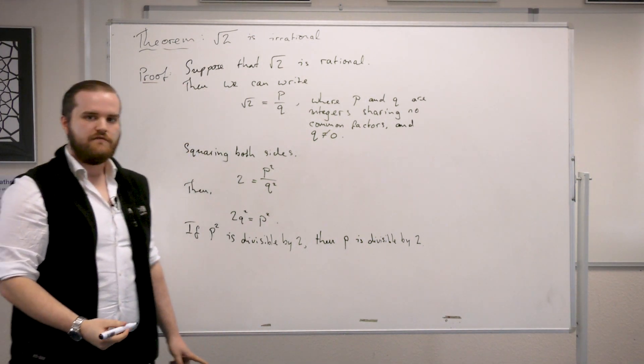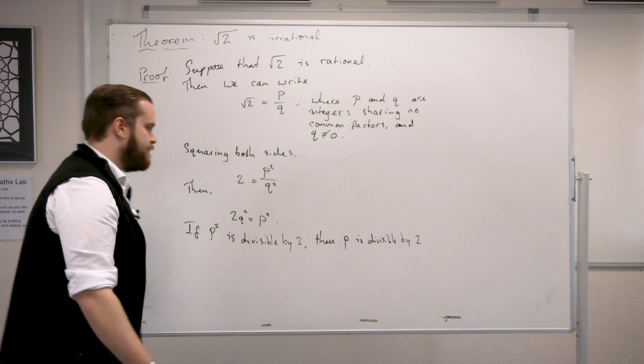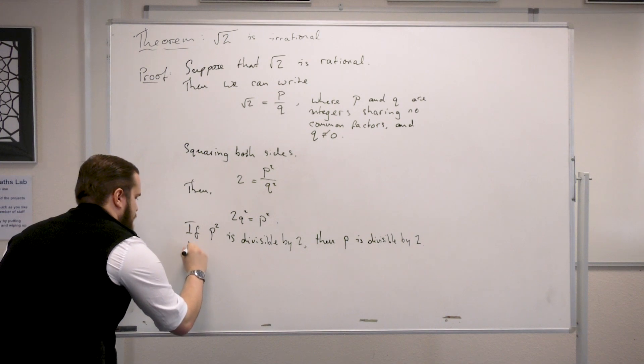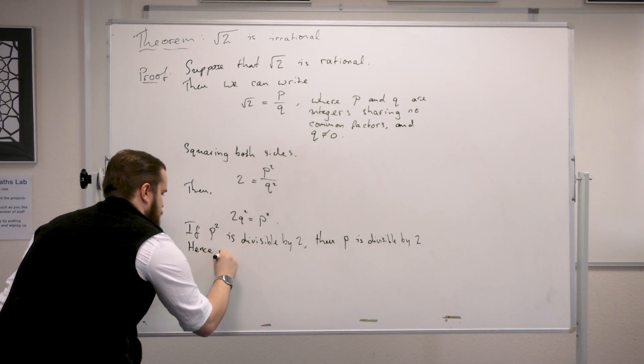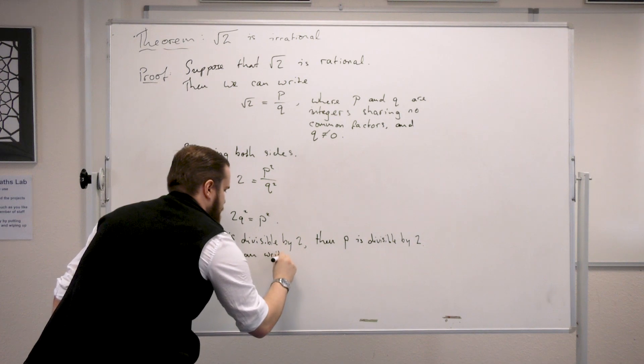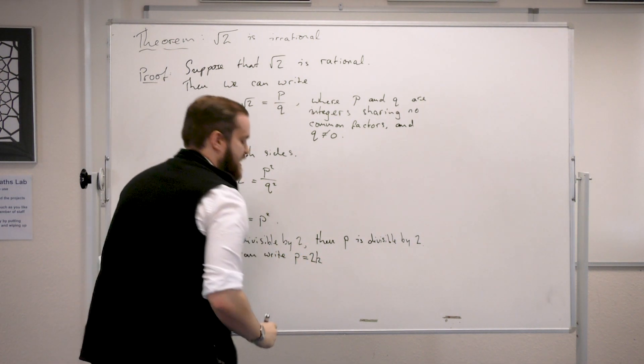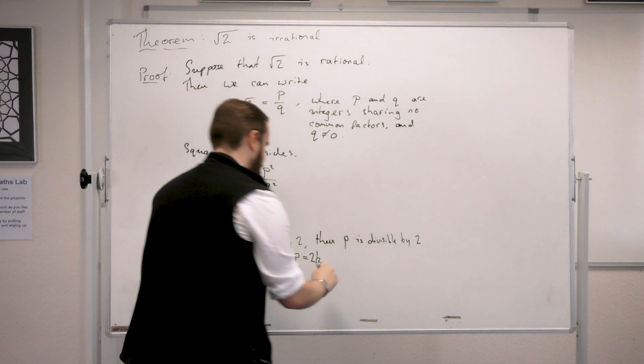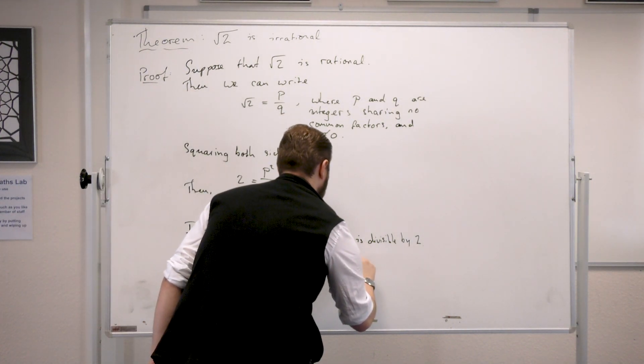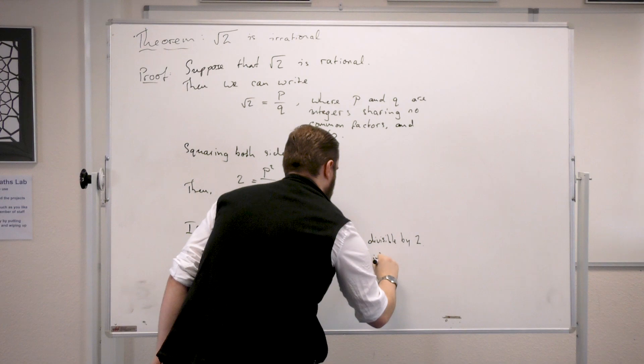Okay, so what does it mean for p to be divisible by 2? It means that we can write p equals 2 times k for some integer k.